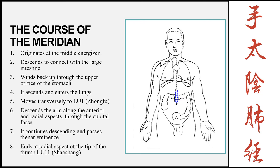Next, we're going to look at the course of the meridian. Before going into this slide, note a few things about the image on the right. The solid line represents the actual pathway the meridian flows, while the dotted line represents either when the meridian moves more interiorly, or a branch off the main meridian. In the animation, dotted lines are shown in blue and the main meridian in red. Each small dot on the main meridian represents one of the acupuncture points we'll go into detail on later.